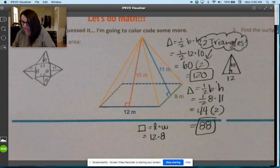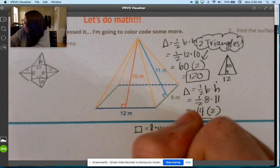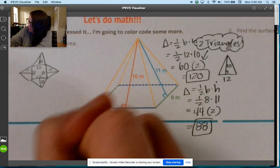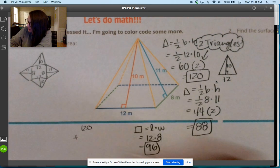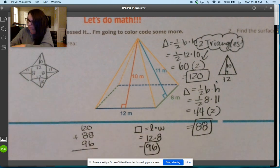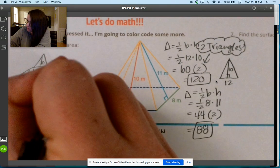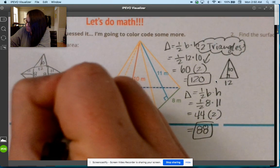Let me add it together. It's 120 plus 88 plus 96. We get 304, so 304 meters squared.